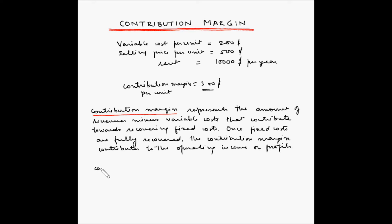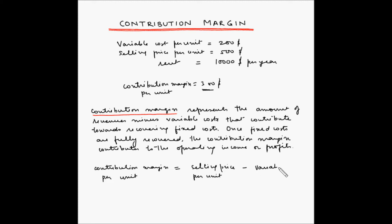In other terms, contribution margin per unit is equal to selling price per unit minus the variable cost per unit. This $300 is abbreviated as unit contribution margin. Selling price per unit is denoted as small p, and variable cost per unit is small c. This is for the unit contribution margin, and the same concept applies to the total contribution margin.